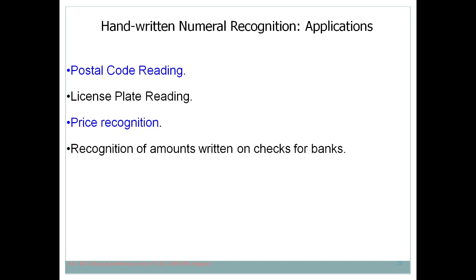Another application is license plate reading. At a toll plaza, a camera is installed to identify the vehicle's number. Nowadays FASTag is used: the camera captures the image, recognizes the vehicle number, and automatically deducts the toll amount from your account.